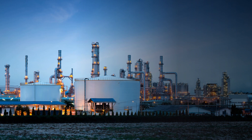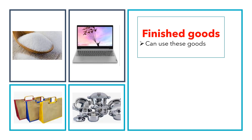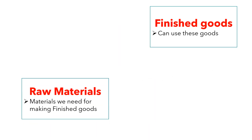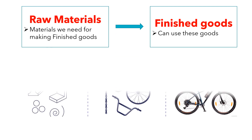In our daily life, we use many goods such as television, books, pens, tables, utensils, clothes etc. These are all called finished goods, meaning we can use these goods directly. Finished goods are made with the help of raw materials — the materials we need for making finished goods. For example, to make a bicycle, we need raw materials such as metal, wheel, chain etc.